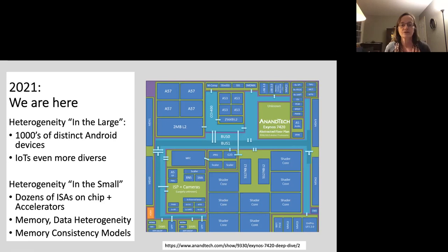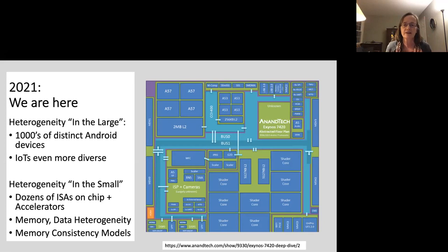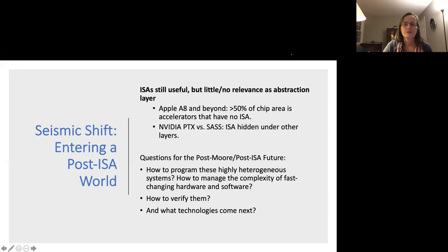There's also heterogeneity in the types of memory and in something called a memory consistency model, which I'll talk about on subsequent slides. In addition to this heterogeneity on each chip, there's also heterogeneity in the large — we have thousands of distinct Android devices, even more IoT devices. The idea that we can write software once, compile it easily, and have it run on many different devices is extraordinarily hard, and even harder to get correct and secure. These hardware-software abstractions we've relied on for 50 years are still there and still useful, but they have much less relevance as durable long-term abstraction layers.